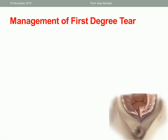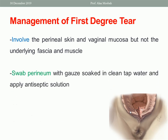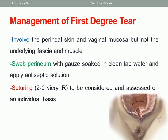Management of first degree tear: it involves the perineal skin and vaginal mucosa but not the underlying fascia and muscles. Swab the perineal muscles, soak in clean tap water, and apply antiseptic solution. Suturing using Vicryl 2-0 should be considered and assessed on an individual basis. If it is superficial and can close spontaneously, you can leave it; if you find it deep and in need of a suture, you can use interrupted or continuous suture.